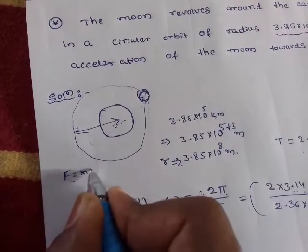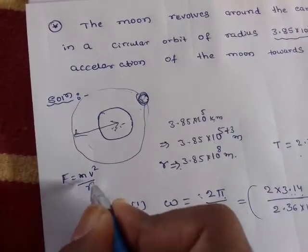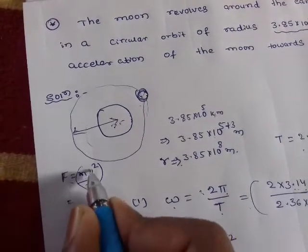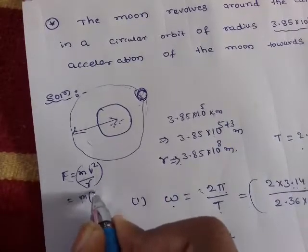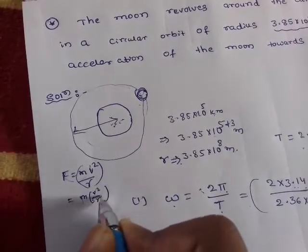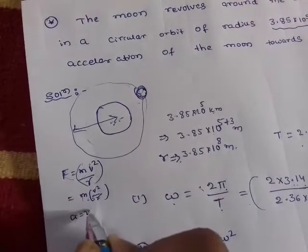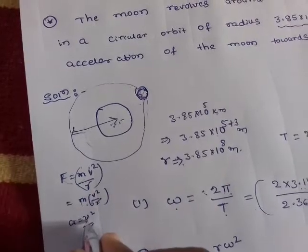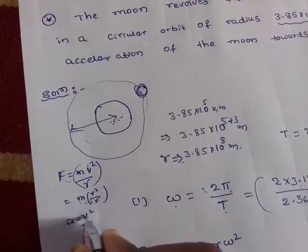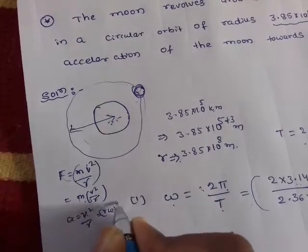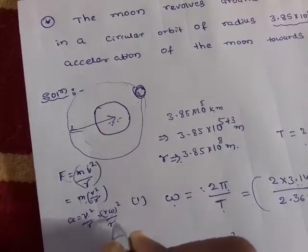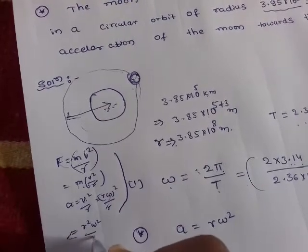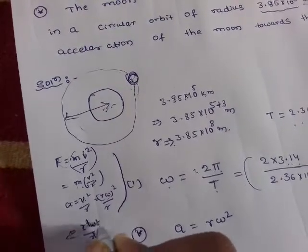Centripetal force is nothing but mv² divided by r. So acceleration a equals v² divided by r. Since linear velocity v equals r·omega, we substitute: a = r²·omega² divided by r. The r cancels, giving a = r·omega².